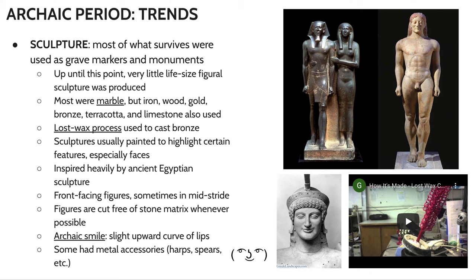The vast majority of the sculptures found from this period were marble, but gold, bronze, terracotta, limestone, and iron were also used. Oftentimes statues made of metals are no longer with us because they were melted down and made into weapons, or stolen and melted down — especially in the case of things like gold. Terracotta is also quite fragile, so naturally it wouldn't survive as long.